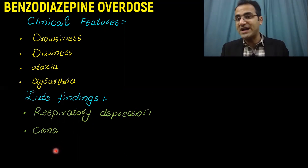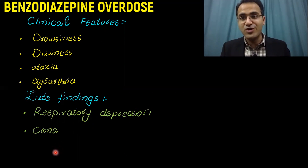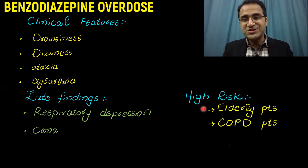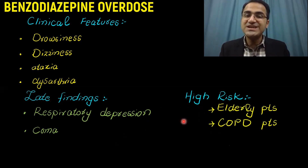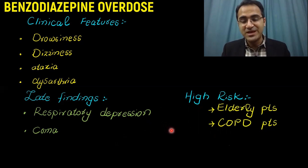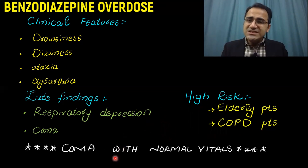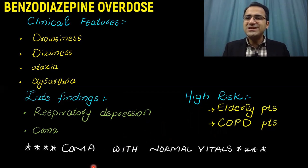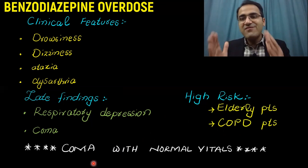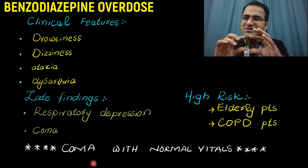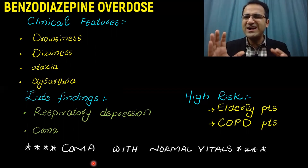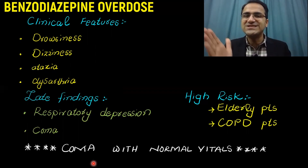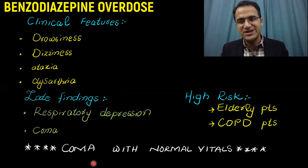In severe cases, coma can be seen with benzodiazepine overdose. High-risk patients include elderly patients who cannot metabolize these drugs effectively and COPD patients who have increased risk of respiratory depression. Remember that these patients typically present to the emergency department in coma but with normal vitals — this is an important indicator of possible benzodiazepine overdose.